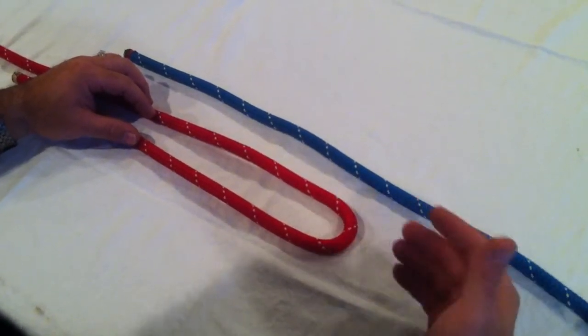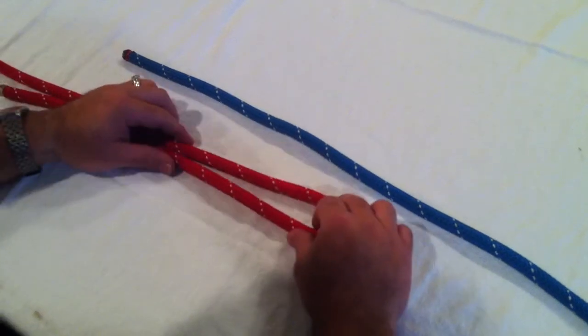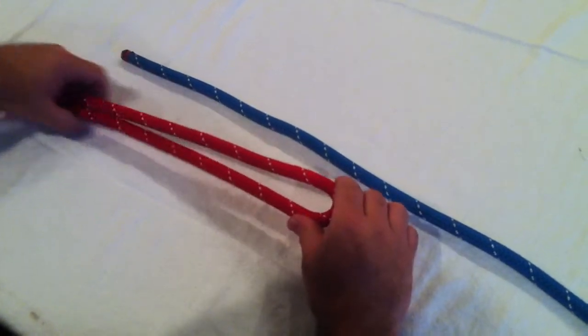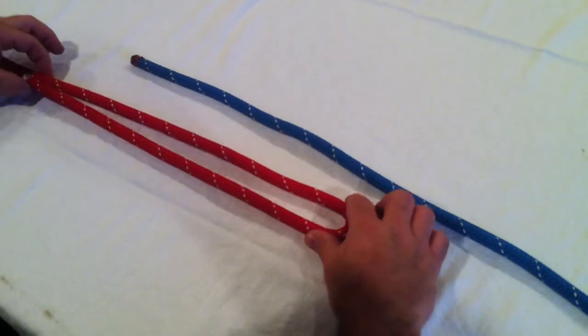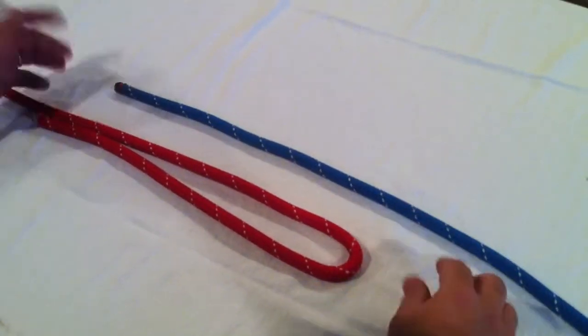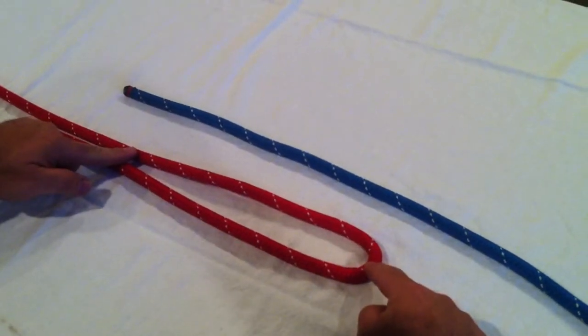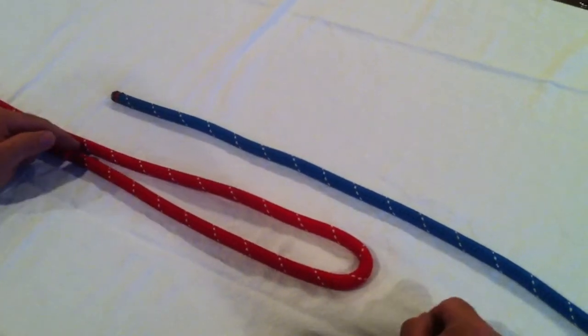If you're using unequal diameter ropes, you want to keep in mind that the fatter rope or the larger diameter rope will want to be, you'll want to start as the bite. So when we tie this we're going to start with one rope as a bite and one rope just with the end of the rope. So if you've got two different diameters, this one here will be the larger diameter of the two ropes.